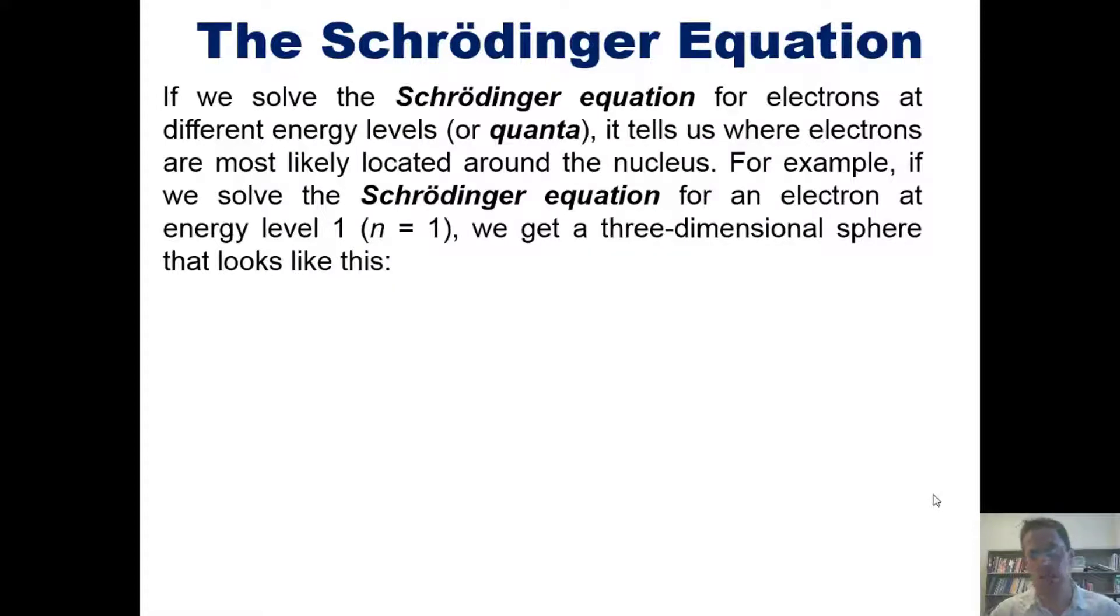And you might imagine doing that on a 3D graphing calculator. That sphere, which is once again the location around the nucleus—if you can imagine the nucleus being right at the center of where these three axes cross each other—that sphere around it represents all the probable locations in which an electron will be found.